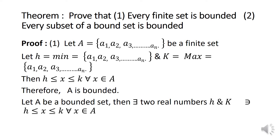Let the set A = {A1, A2, A3, ..., An} be a finite set. Let H be the minimum of {A1, A2, ..., An} and K be the maximum of {A1, A2, ..., An}. Then every element X satisfies H ≤ X ≤ K for all X belonging to set A. Therefore, we can say that A is bounded, because any arbitrary element X lies between the minimum H and the maximum K.